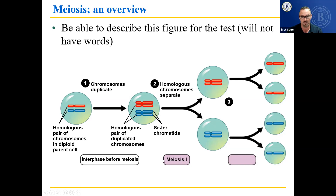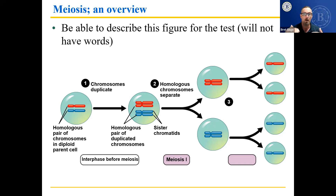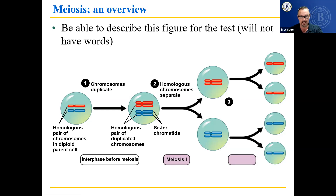Here's the key in meiosis one — the first set of divisions: the red separates from the blue, but they're still duplicated. The homologous chromosomes separate. Please note: not all of dad's go one way and all of mom's go the other. It's random — some of mom's go one way and some of dad's go that same way as well. They separate, so we separate the homologous pairs. We had two chromosomes; now we each have one — still doubles, but it's still one. The key to meiosis one is the total number of chromosomes is cut in half. This is when we go from diploid to haploid.